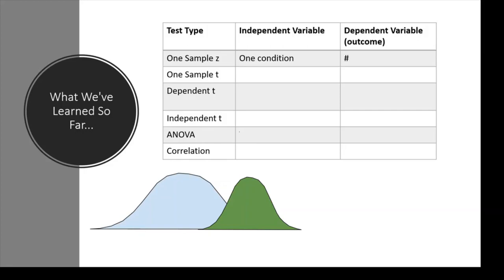There was one condition: those who consumed the tea. Then we looked at a one-sample t, which also involved one condition and a number outcome. We moved to a one-sample t because we used it when we didn't know the sigma or standard deviation of the population. It's much more common than the one-sample z, but pictorially it still represents comparing that group to the normal population.